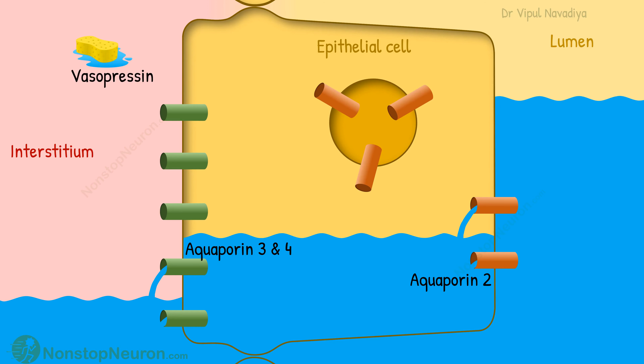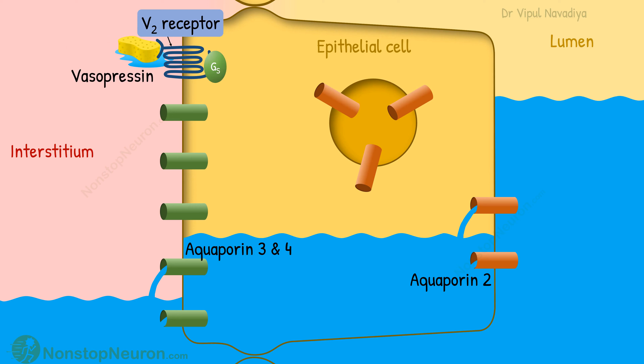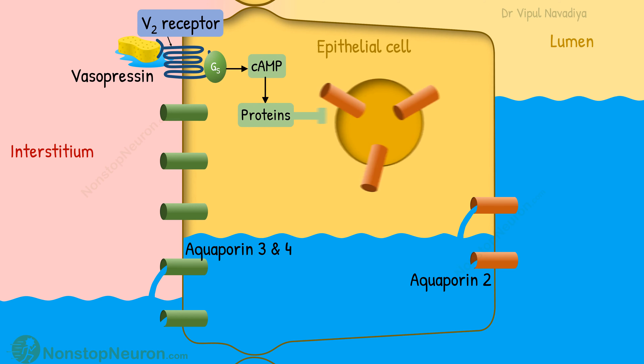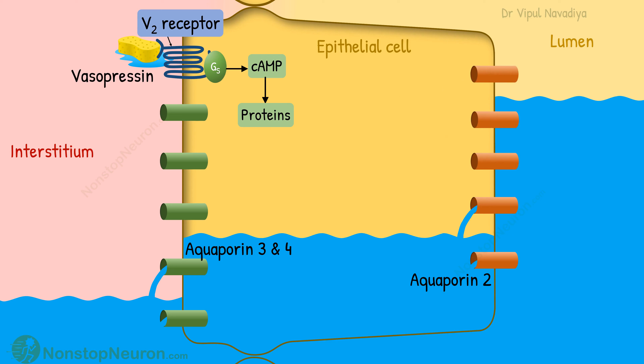Now let's see how vasopressin increases water reabsorption. Vasopressin binds with its V2 receptor, located at the basolateral membrane. This receptor is a Gs-coupled receptor. It acts via the cAMP pathway, resulting in the activation of certain proteins. These proteins cause exocytosis of the vesicle, resulting in the insertion of aquaporins into the apical membrane.